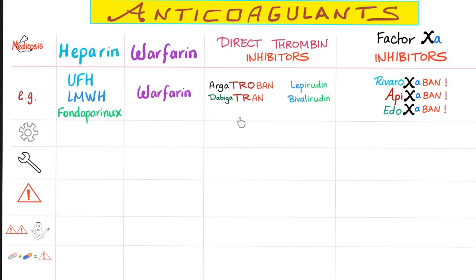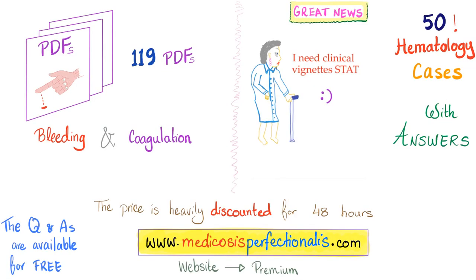Also for pharmacology, you can do the same table. Here is heparin, warfarin, direct thrombin inhibitors, factor Xa inhibitors — you can also add aspirin, etc. For each one, get an example of each class, then the mechanism of action, clinical indications or uses, side effects, contraindications, and drug-drug interactions. So the bleeding and coagulation playlist is over.